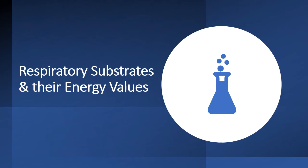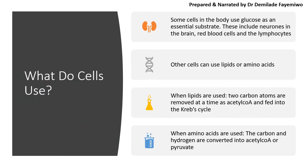That is the end of anaerobic respiration. The last part is respiratory substrates and their energy values. What do cells use for energy? Some cells in the body use glucose as an essential substrate — these include neurons in the brain. Your brain always prefers glucose, which is why many people protest against diets like the keto or paleo diet where carbohydrates are restricted. Your red blood cells and lymphocytes will also prefer to use glucose as an essential substrate.